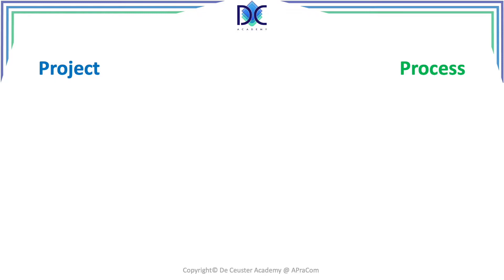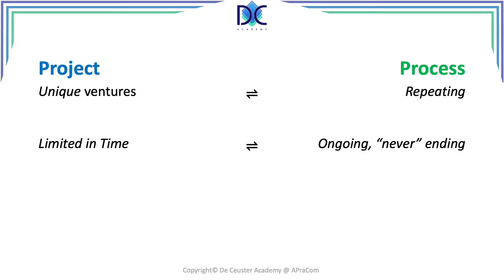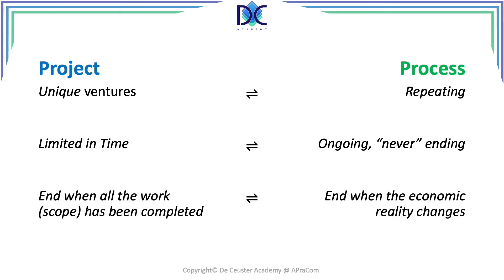A project is a unique venture, while a process is ongoing and different steps are repeated. Projects are limited in time, while processes are ongoing or never-ending. A project ends when all the work has been completed. A process ends when the economic reality changes — for example, when a company is launching a new car model, the production of the old model will stop.